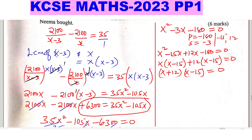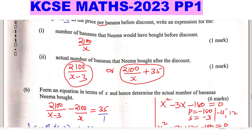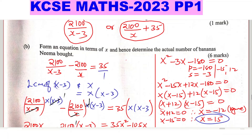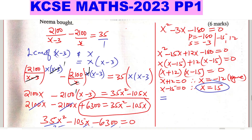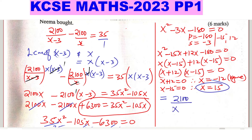This gives two solutions: X plus 12 equals zero, so X equals negative 12 (ignored, since price cannot be negative), and X minus 15 equals zero, so X equals 15. Therefore, the price per banana before the discount was 15 shillings. The actual number of bananas bought after the discount is 2100 divided by (15 minus 3) equals 2100 divided by 12, giving 175 bananas.